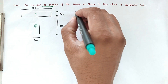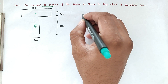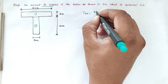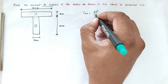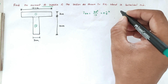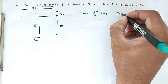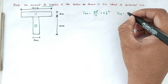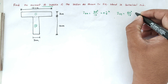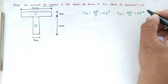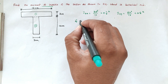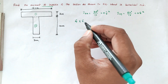We need to find moment of inertia Ixx and Iyy. The formula for Ixx equals bd³ divided by 12, plus A into ȳ² . For Iyy, the formula is db³ divided by 12, plus A into x̄².